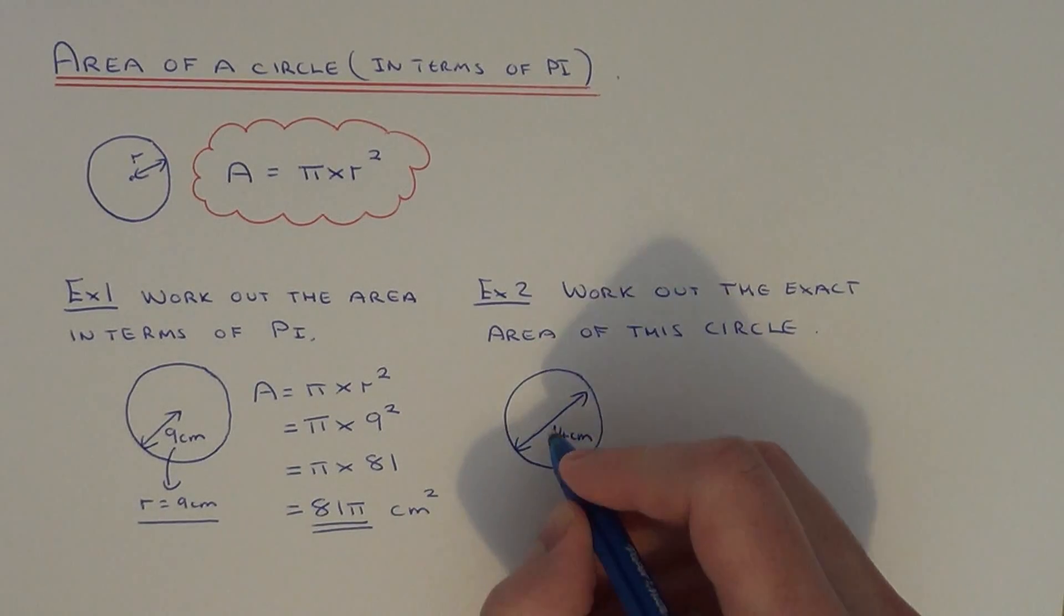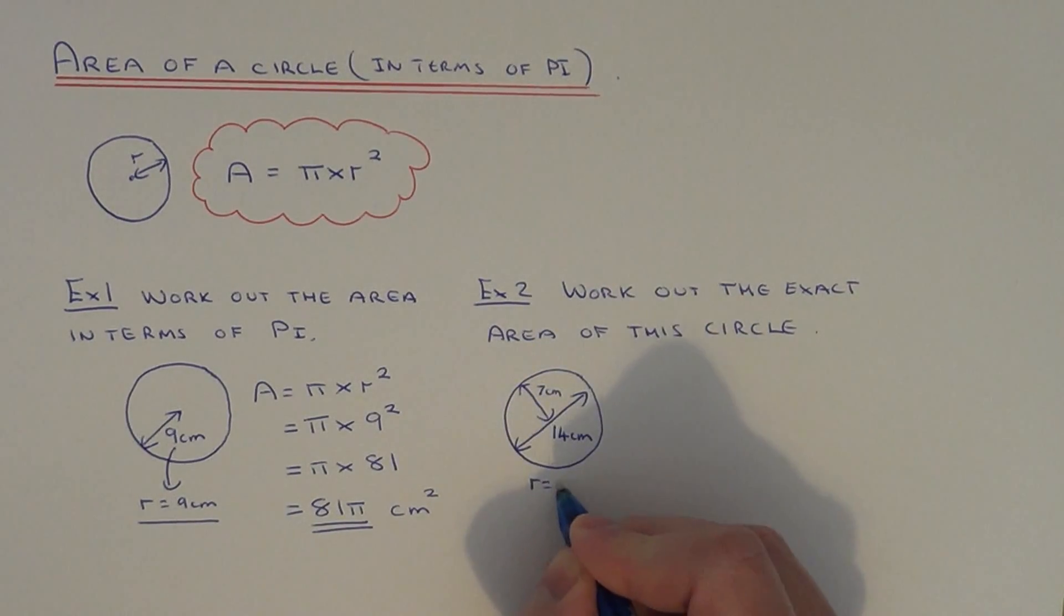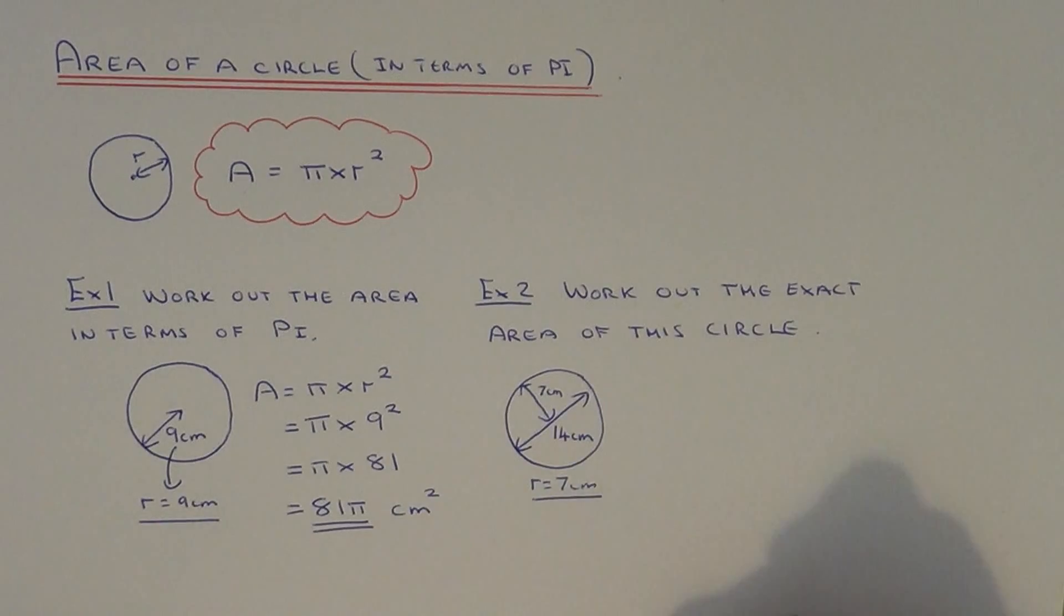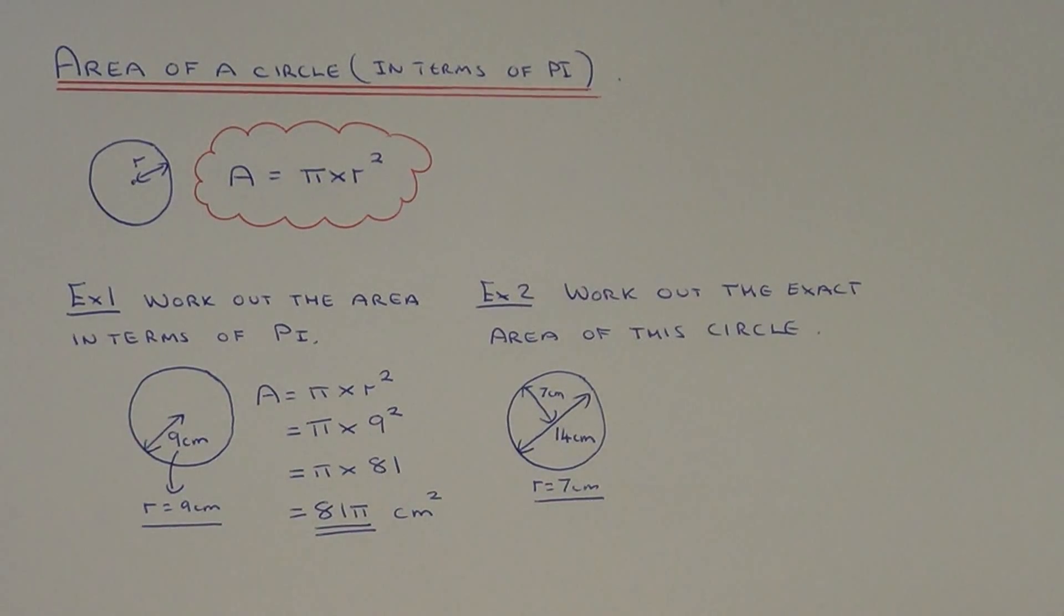If the diameter is 14, the radius is half the diameter. So half of 14 is 7. Our radius is 7 centimeters. This is the number we substitute into our formula.